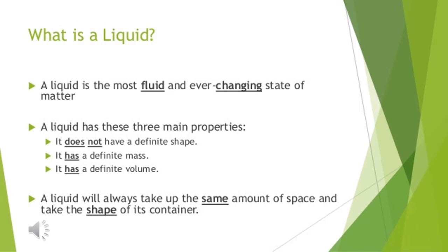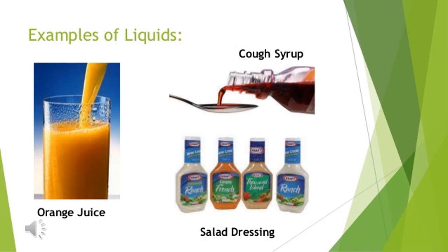Now let's move to the characteristics of liquid. Liquid is the most fluid and ever-changing state of matter. A liquid has three main properties: it does not have a definite shape like a solid does, but it has definite mass and definite volume. The contrasting difference between solid and liquid is just about shape — solid has a definite shape whereas liquid does not. A liquid will always take up the same amount of space and take the shape of its container. Examples include orange juice, salad dressings, and cough syrup.